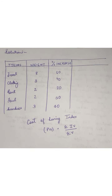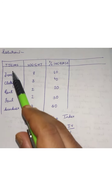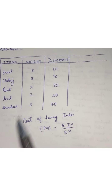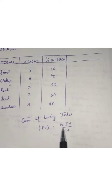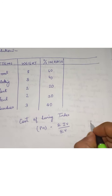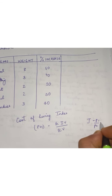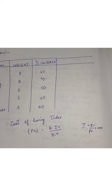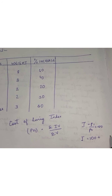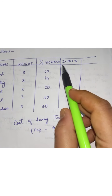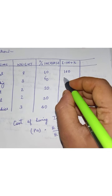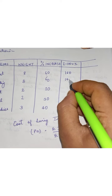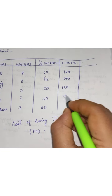For solving the problem, I have listed all the given data into a tabular form with items, weight, and percentage increase in price. For finding the cost of living index, the formula is: summation of I×V divided by summation of V. Since we are given percentage increase in price rather than actual prices P1 and P0, we use the formula: I = 100 + percentage increase. So we append a column for I by adding 100 to each percentage.